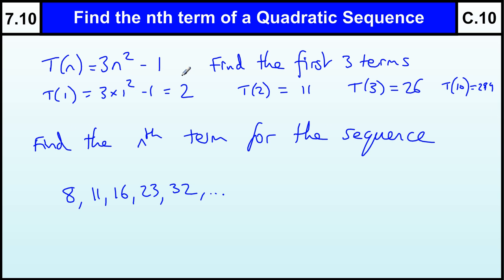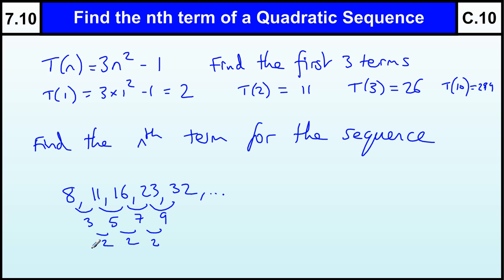So when you're finding the nth term, that's the sort of thing you're looking for. We know this is an n squared sequence because if we look at how much the sequence goes up by, it goes up 3, 5, 7, and 9. In a normal sequence they go up the same each time, but this doesn't. If you take the difference of the differences, you'll see it goes up by 2, and that is symptomatic of a quadratic sequence.